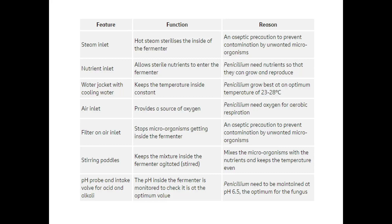The fermenter features include: a steam inlet, where hot steam sterilizes the inside as an aseptic precaution to prevent contamination by unwanted microorganisms. A nutrient inlet allows sterile nutrients to enter so penicillin can grow and reproduce. A water jacket with cooling water keeps the temperature constant — penicillin grows best at an optimum temperature of 23 to 28 degrees.